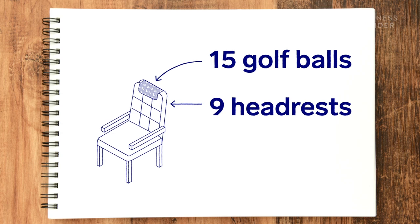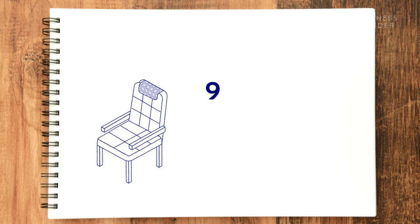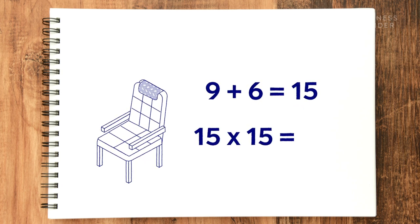I'm gonna say there are three rows of three headrests that fit in the back portion of the seat, and then two rows of three for the bottom part. That gives us nine on top and six on the bottom — 15 headrests in the seat. Times 15 golf balls in each headrest, that gives us 225 golf balls per seat.